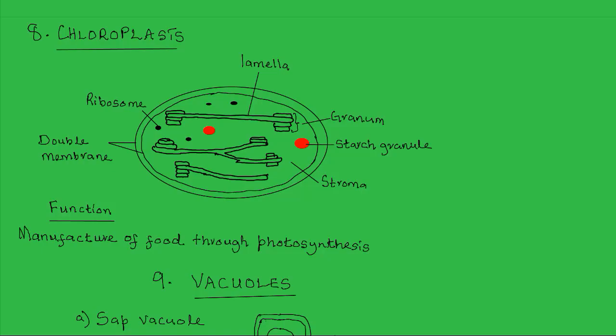Our next organelles are the chloroplasts. Chloroplasts are large oval-shaped or egg-shaped structures found in cells of leaves and green parts of the stem in plants.